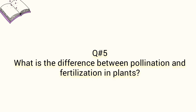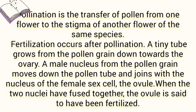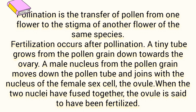Now open your journal to question number five and six. Question five asks: what is the difference between pollination and fertilization in plants? The answer is: pollination is the transfer of pollen from one flower to the stigma of another flower of the same species. Fertilization occurs after pollination — a tiny tube grows from the pollen grain down towards the ovary, and a male nucleus moves down the pollen tube and joins with the nucleus of the female sex cell, the ovule.